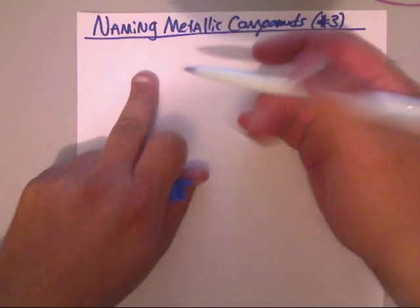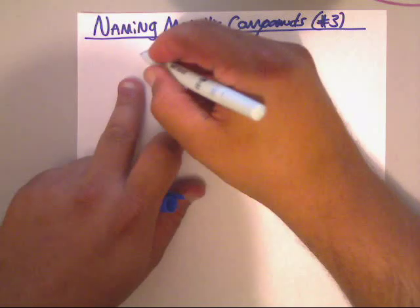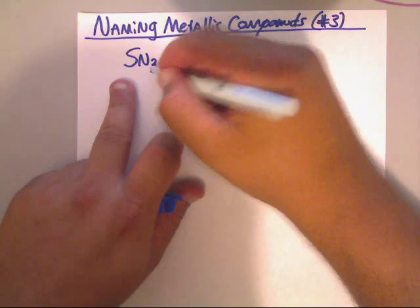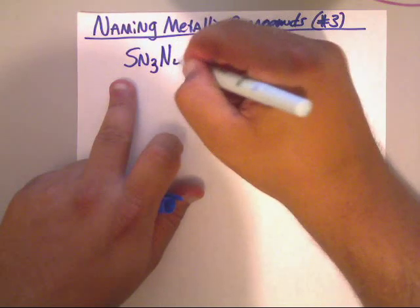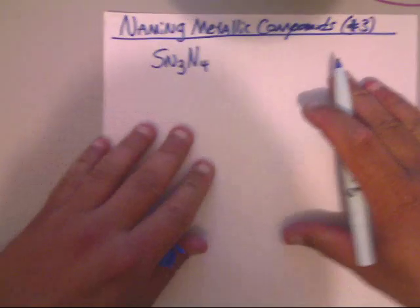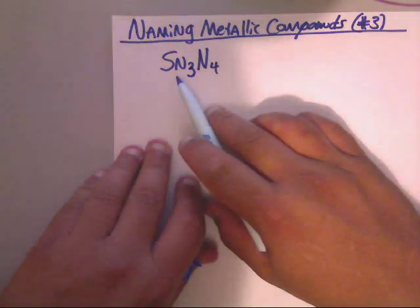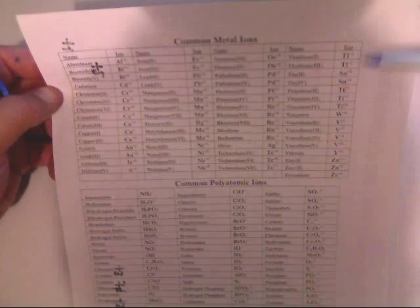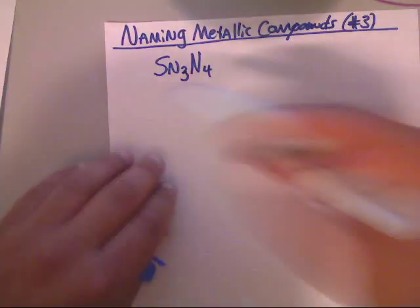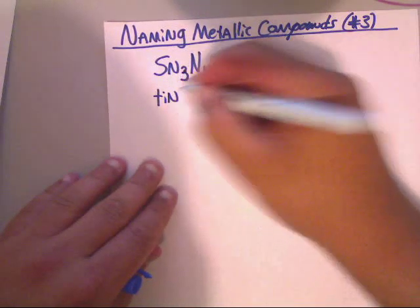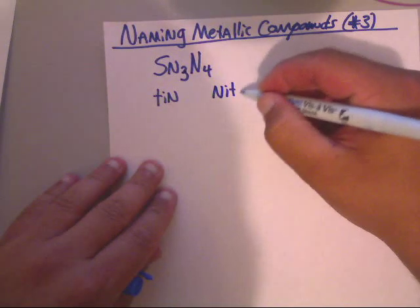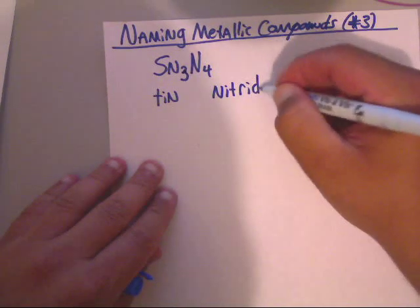On this one we're going to do it for Sn₃N₄. Now on this, this is maybe kind of easy. If you don't know what Sn is, you can look on your yellow sheet or you can look in the back here. Sn is tin. So we know Sn is tin. So we're going to write tin. And we know that nitrogen, we've done so many of these now, that we know nitrogen is nitride. Now we need the Roman numerals.